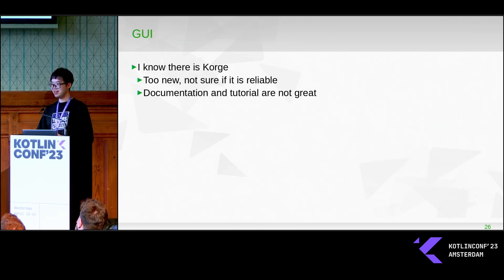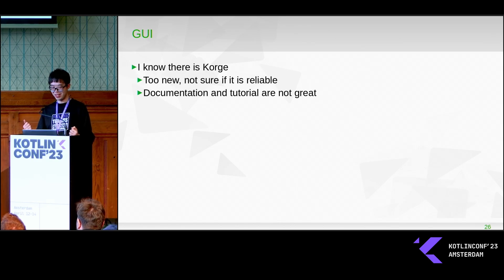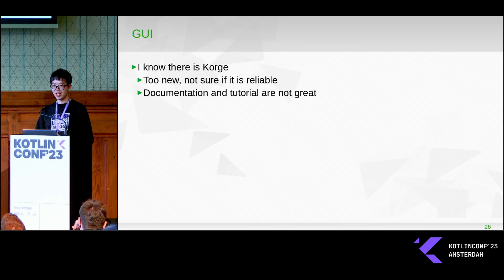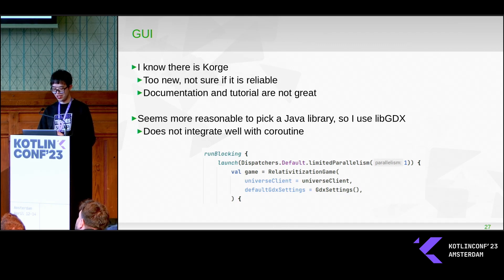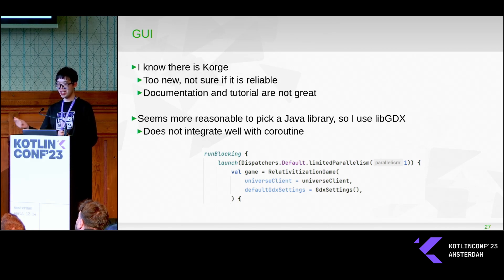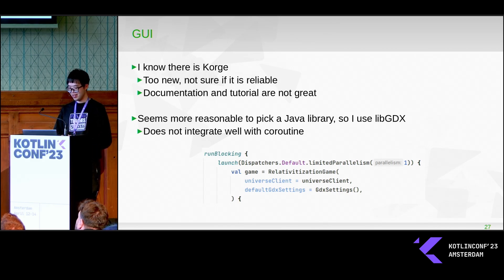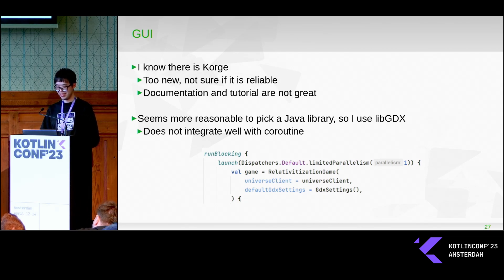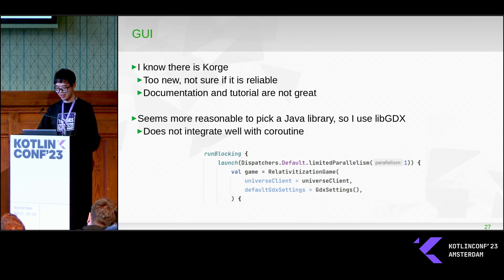For the graphics interface, it is a bit more challenging because there is no great native Kotlin game engine. In Kotlin, there's a thing called KorGE, which is written in pure Kotlin, but I felt it was too new and the documentation and tutorials were not that great when I started this project. So I decided to use something classic — a Java library, libgdx — and it also works, but it comes with a cost because Java doesn't play nicely with Kotlin. I essentially had to create a separate thread for the graphics interface, which is okay but not ideal.